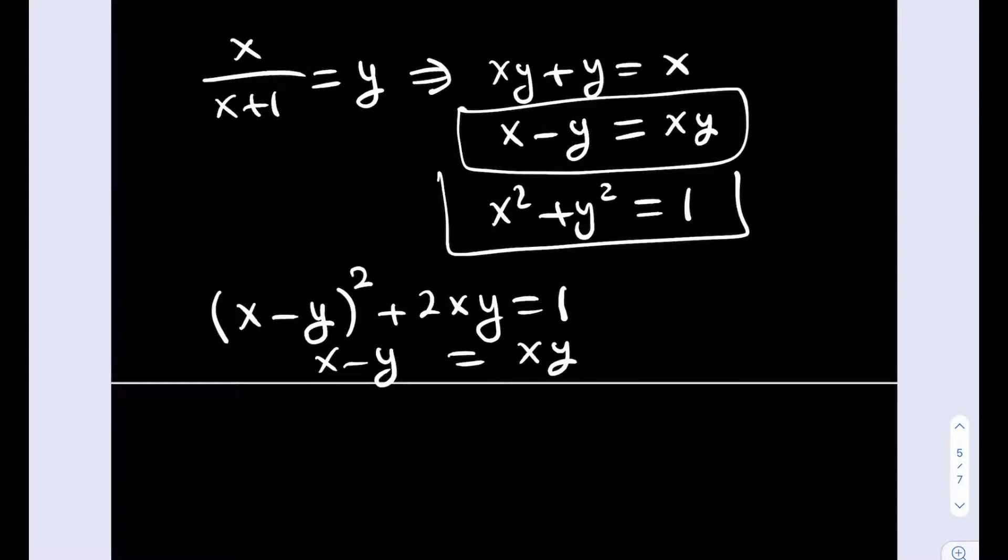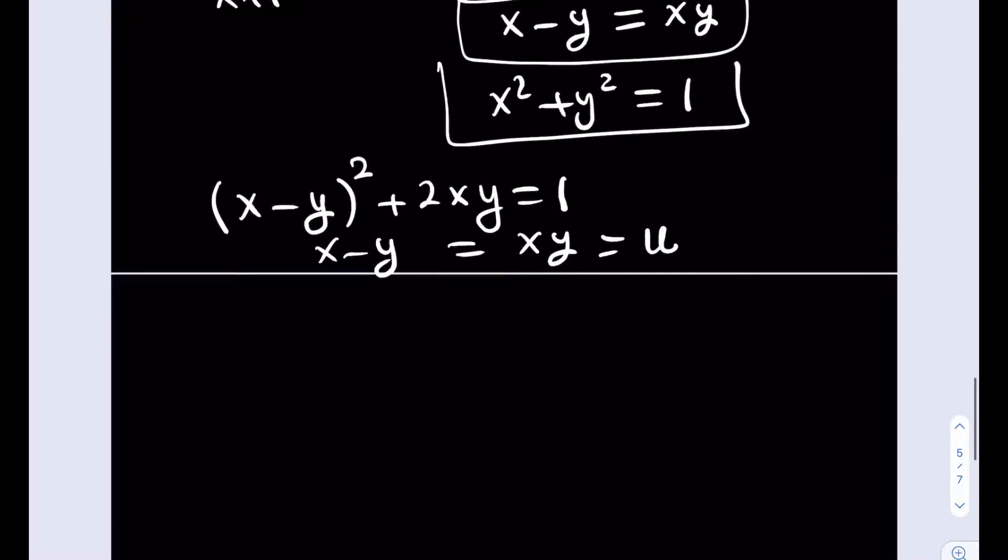So if you substitute here, let's say we call this u. Both of them are going to equal u in this case. So now I can replace x minus y with u. That's going to give me u squared plus 2u equals 1. If you add 1 to both sides, as you know, we're going to be getting u plus 1 quantity squared equals 2.